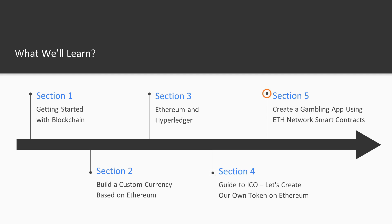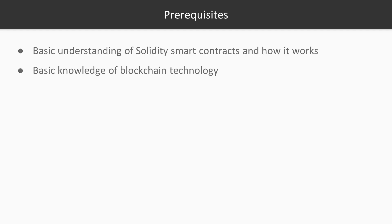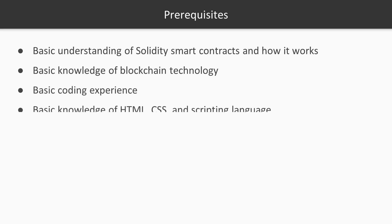We'll create the smart contract for the back end of this gambling app. The prerequisites are: at least a basic understanding of Solidity, smart contracts, and how they work. If you don't know, you can check my previous course on blockchain development for beginners where I've explained Solidity. We will also need a basic knowledge of blockchain technology and at least basic coding experience — good enough to know the basic syntax.